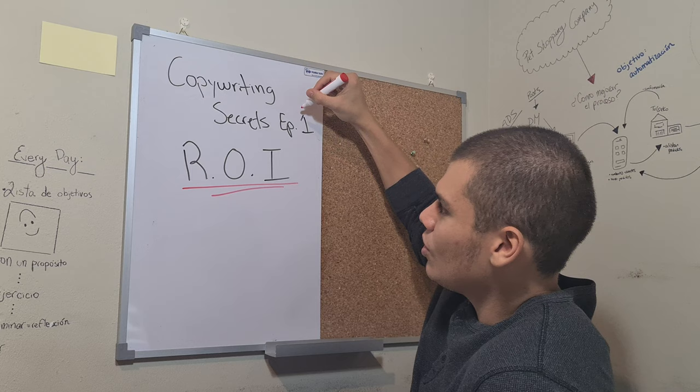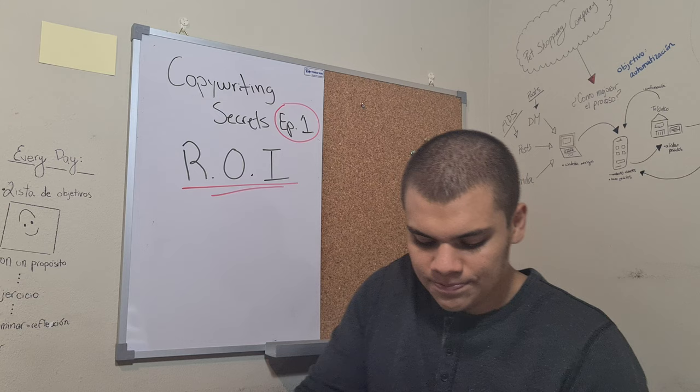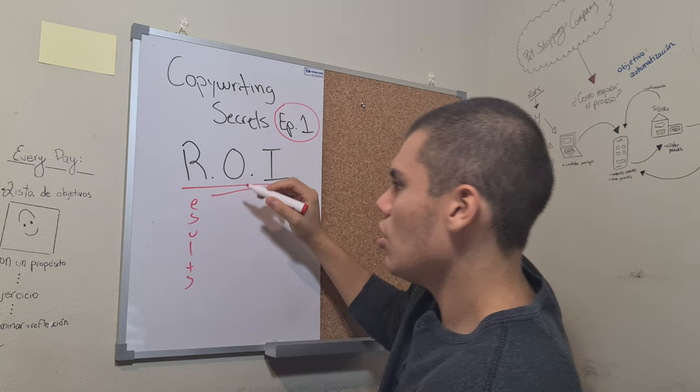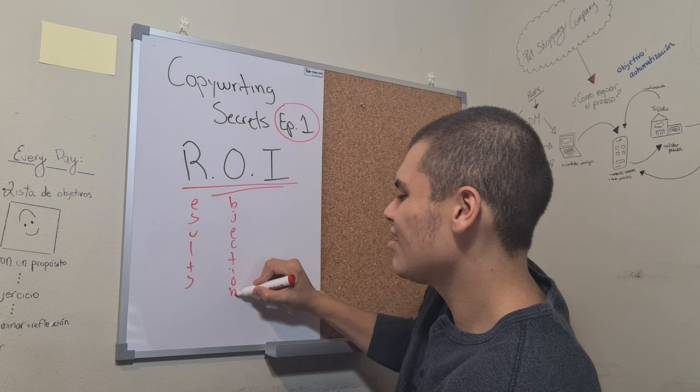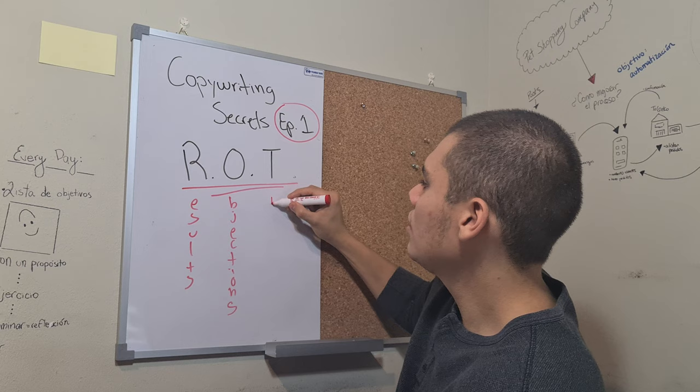Copywriting secrets episode number one: ROI. What does this mean? R results, O objections, I... I mean ROT, I'm so dumb. Time.